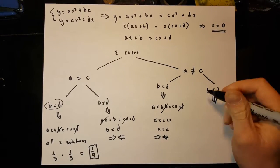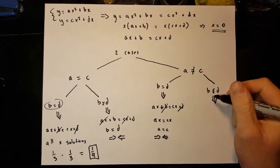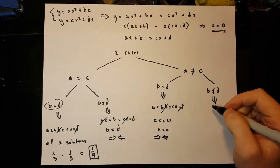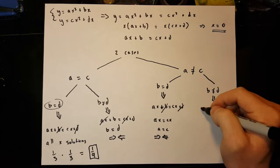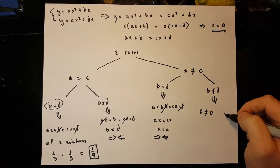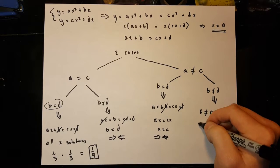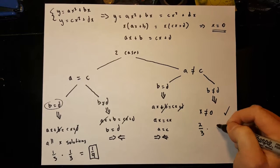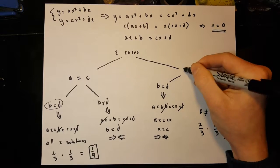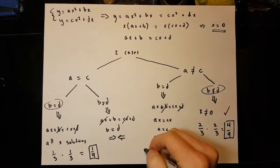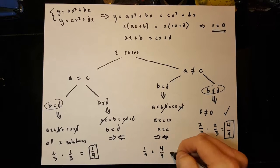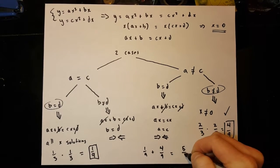The probability that a is not equal to c and b is not equal to d is two-thirds times two-thirds, since two-thirds is the probability that any two variables are not equal to one another. Therefore, we can find our final answer by adding one-ninth to four-ninths, which is five-ninths.